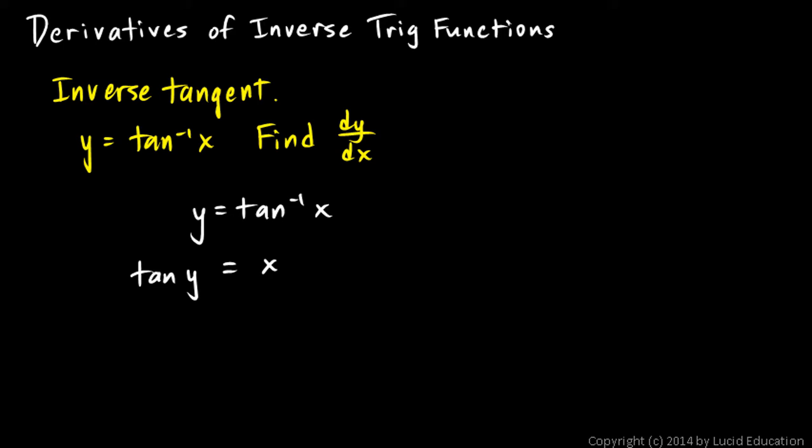And don't forget the chain rule. So over here on the left, I'm going to take the derivative of tangent y. Well, the derivative of the tangent function is secant squared, so the left side is secant squared y times the derivative of my inner function. And the derivative of y is just dy/dx, or we'll write it as y prime. So this is the derivative of that, the derivative of the left side done implicitly.